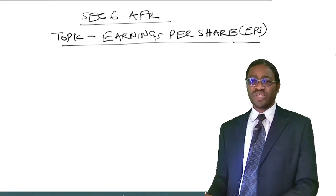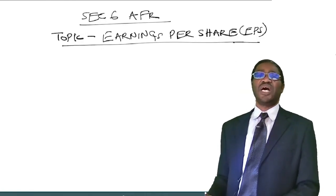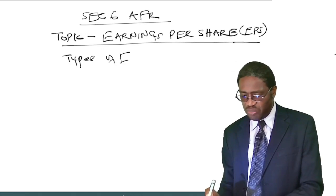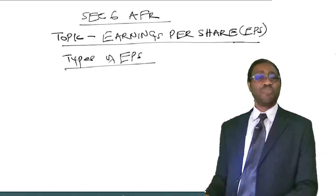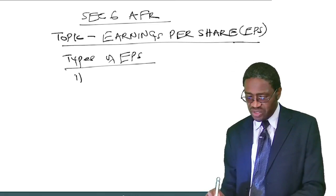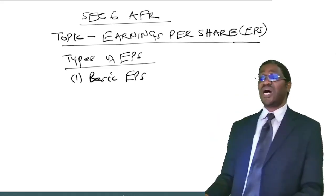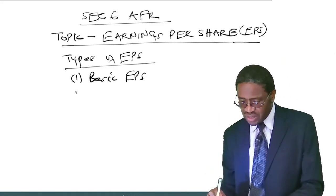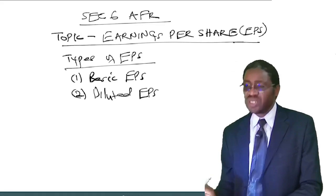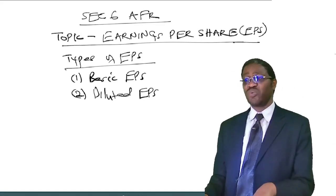Let's start the topic called Earnings Per Share. There are two types of earnings per share that we shall be calculating in this topic. The first is what we call the basic earnings per share, and the second type is what we call diluted earnings per share. Those are the two types we shall be dealing with.